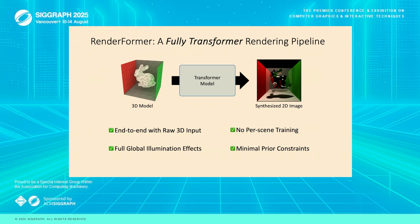At its core, Renderformer takes a standard 3D scene and processes it end-to-end within a transformer model, directly outputting the final image with full global illumination effects, all in a single pass no matter how complex the light transport is. The model learns this completely from data with very few built-in assumptions. Once trained, Renderformer can render completely new scenes instantly with no need for per-scene training or fine-tuning.